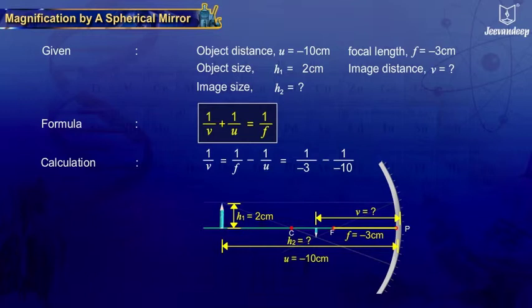we have 1 upon V is equal to 1 upon minus 3 minus 1 upon minus 10.